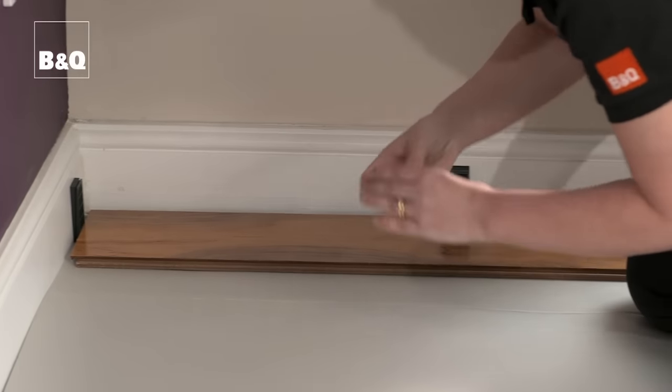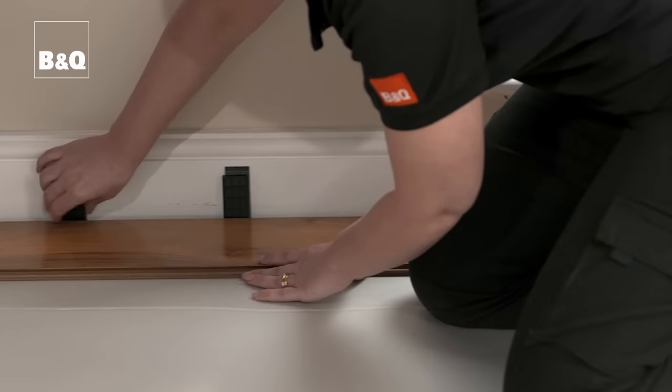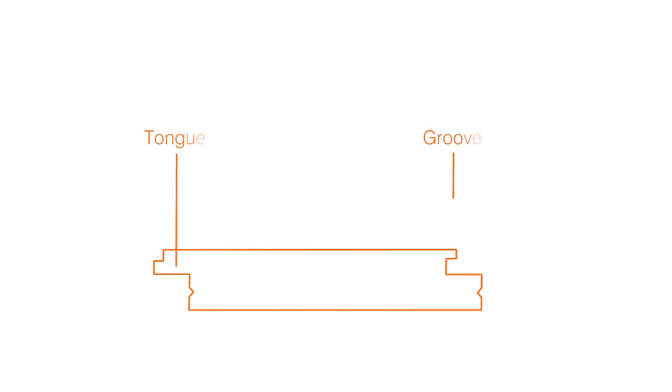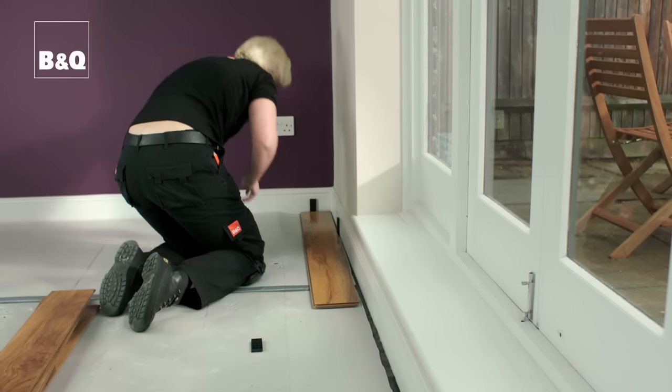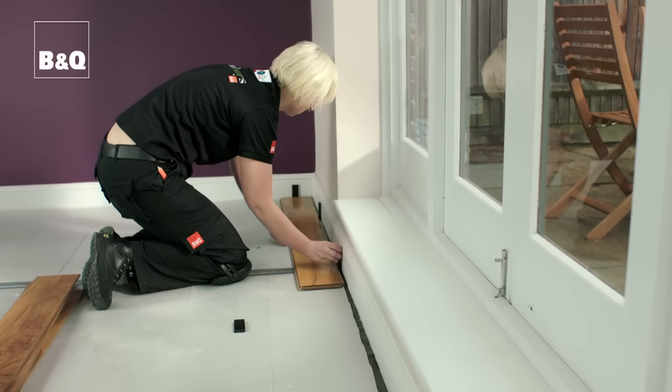Lay the first board in the left-hand corner, over the underlay with the tongue nearest the wall. Put a 10mm expansion spacer against the end of the board and at intervals along the wall.